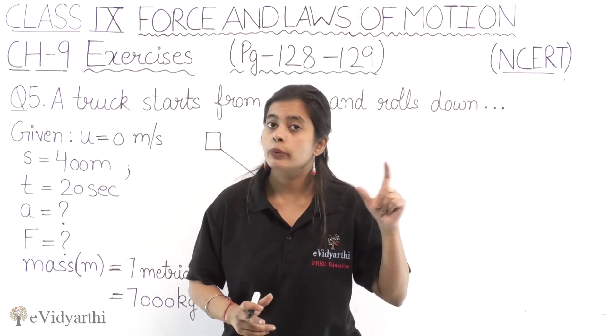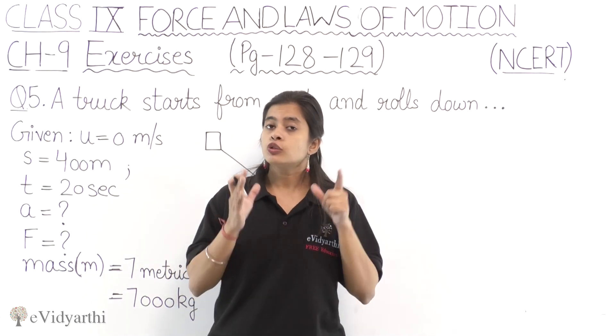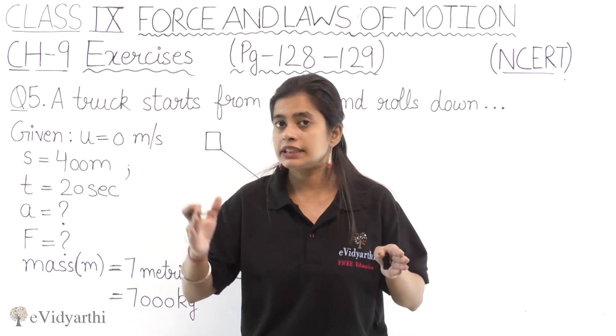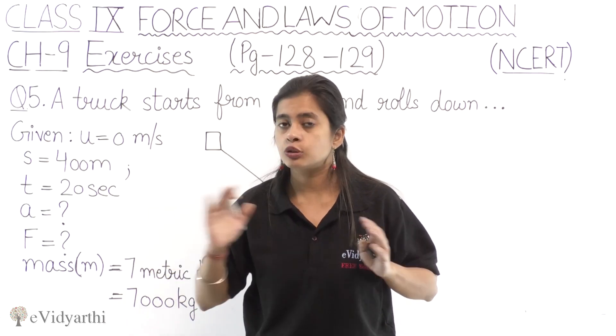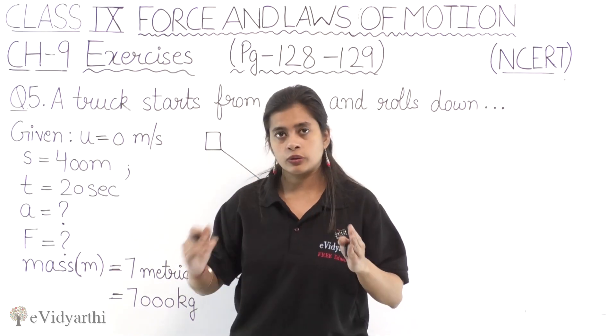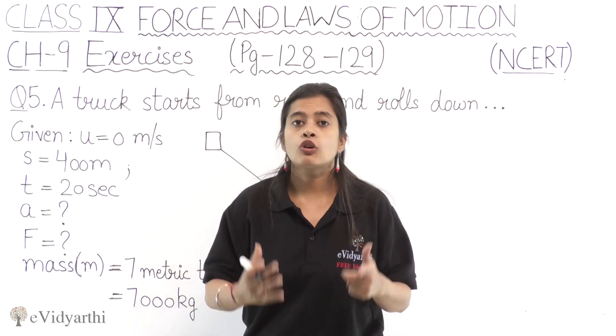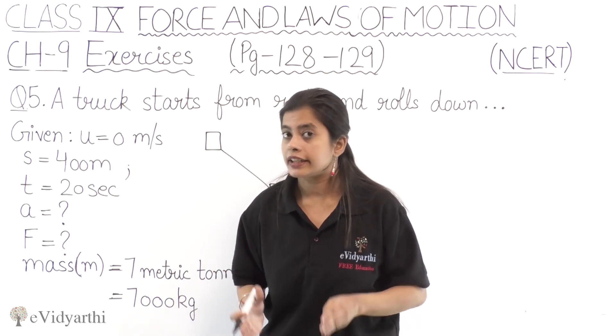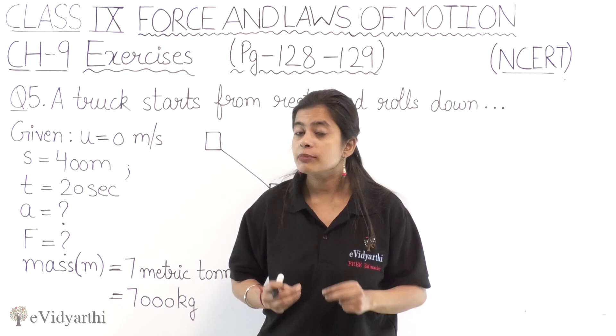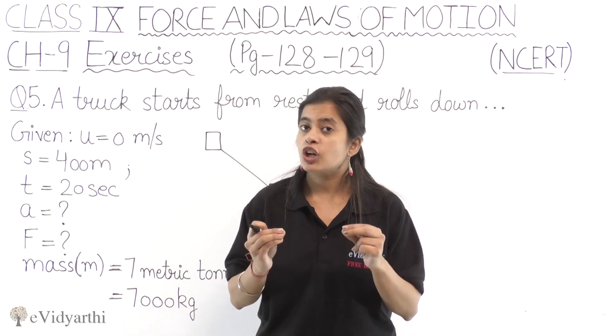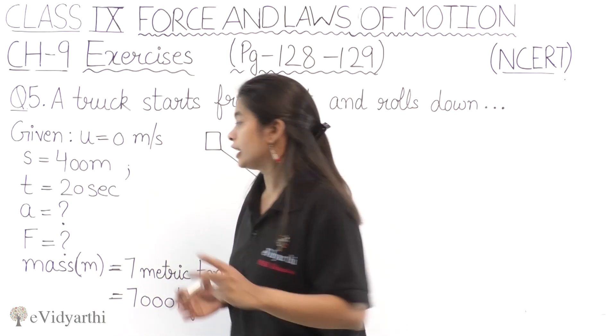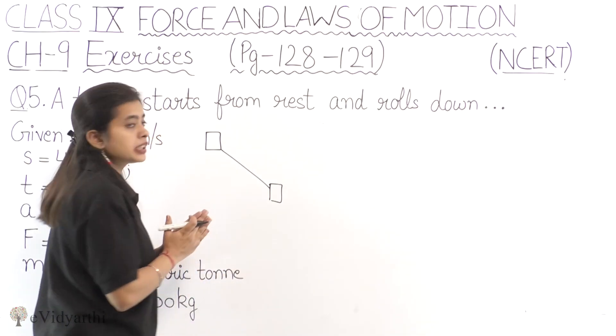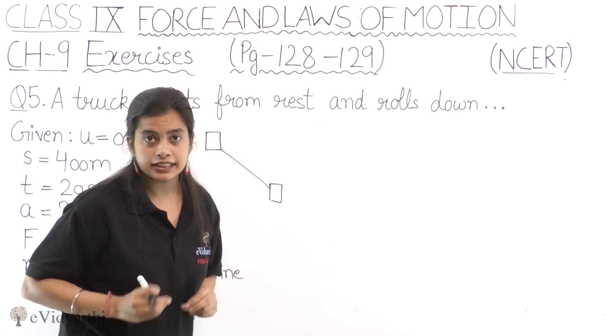First of all, it moves down a hill with a constant acceleration. So we have to focus on the equation. What does constant acceleration mean? That the rate of velocity is not changing. So throughout the journey, they have constant acceleration.